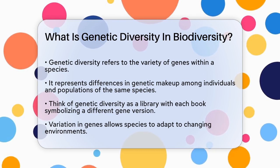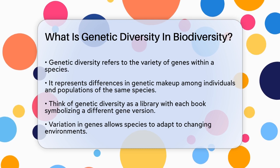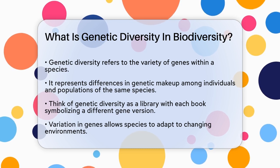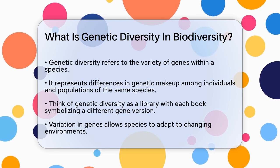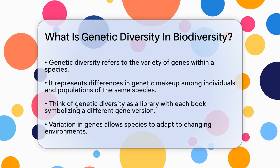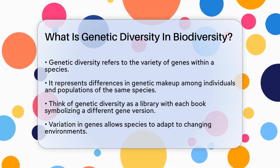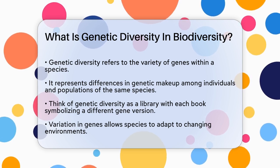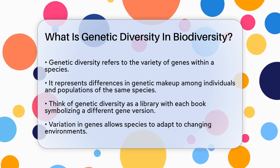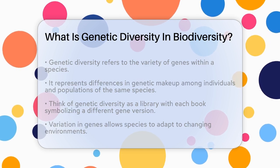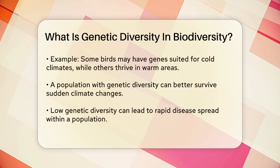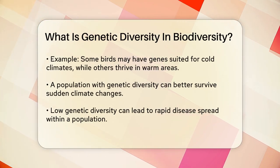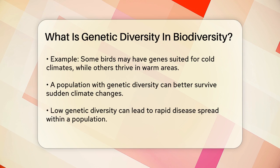For example, within a species of birds, some individuals might have genes that make them better at finding food in cold climates, while others might have genes that help them survive in warmer areas. This variation is crucial because it allows the species to adapt to changing environments.